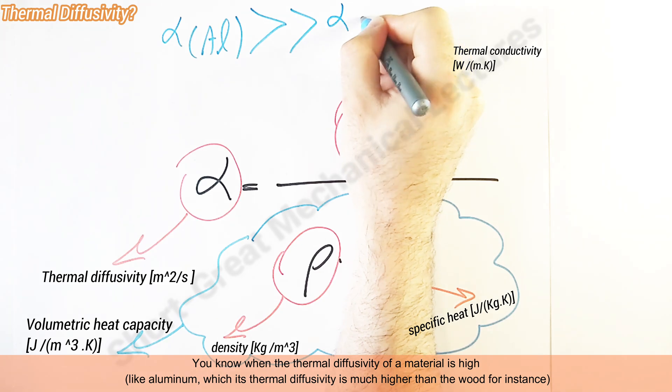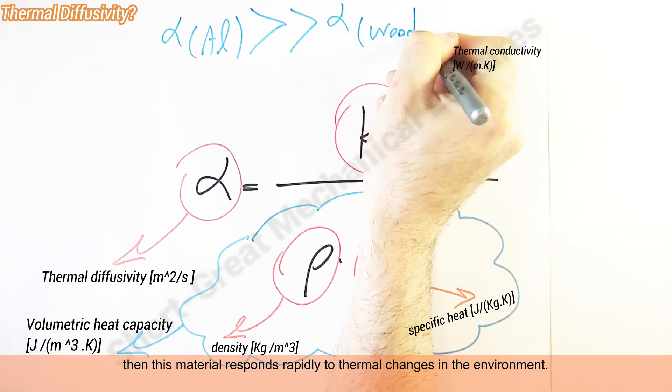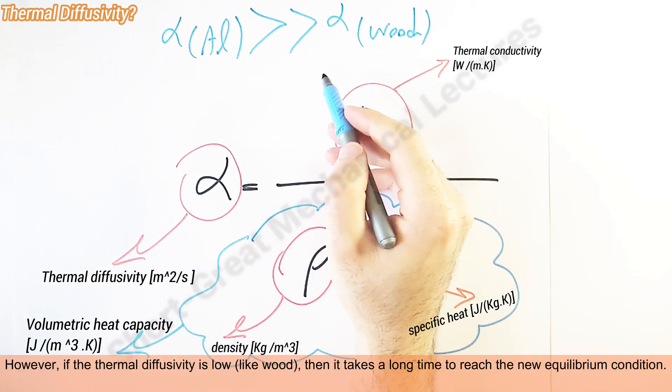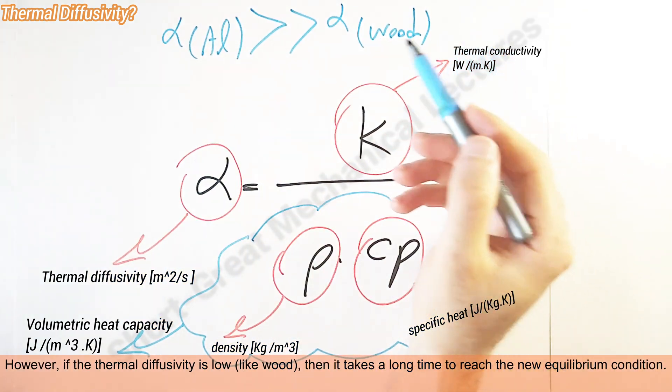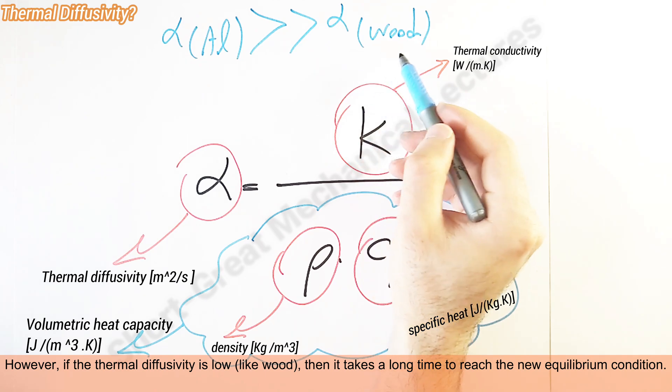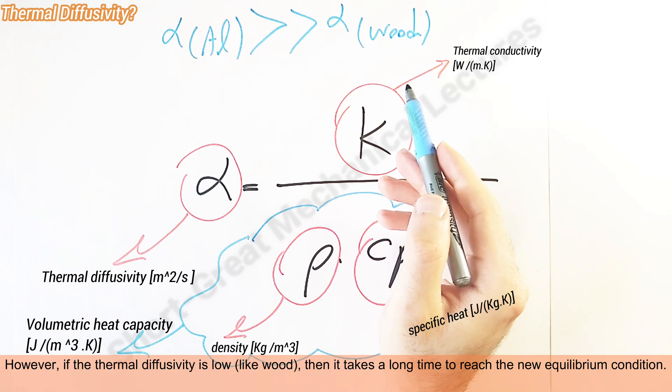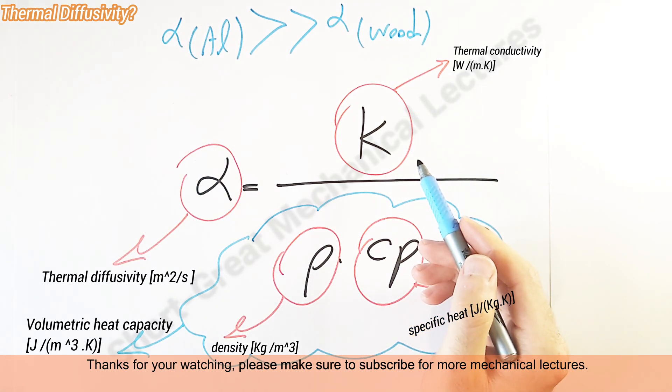then this material responds rapidly to thermal changes in the environment. However, if thermal diffusivity is low, like wood, then it takes a long time to reach the new equilibrium condition.